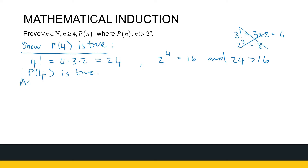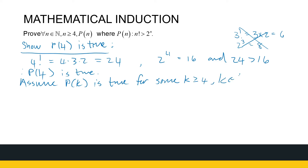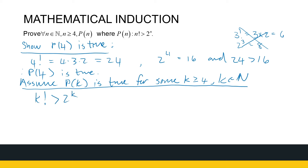Now we assume that P(k) is true for some k greater than or equal to 4, where k is a natural number. So that means k factorial is greater than 2 to the power k.